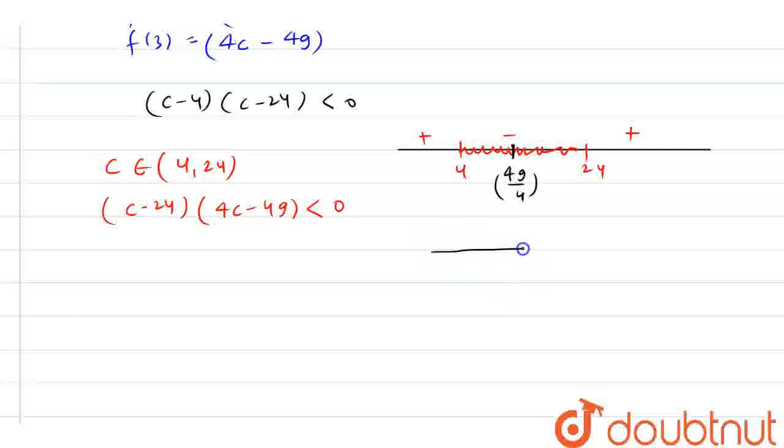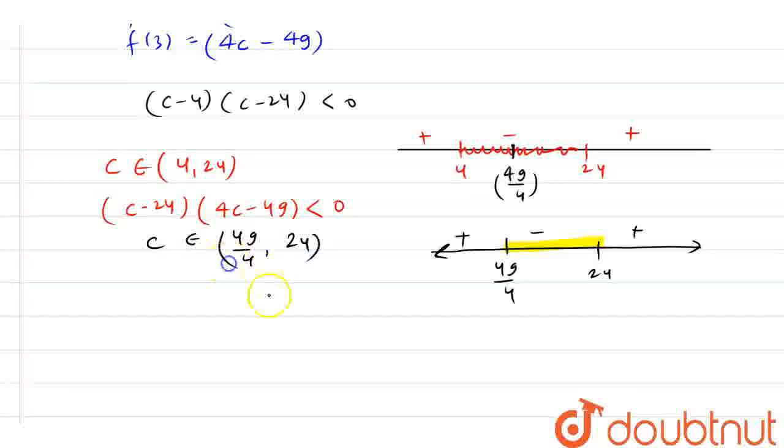Let me draw another number line so you can get a clear picture: 49/4, 24. This is positive, negative, and positive. We need a negative value, so this will be my answer. So c belongs to (49/4, 24).